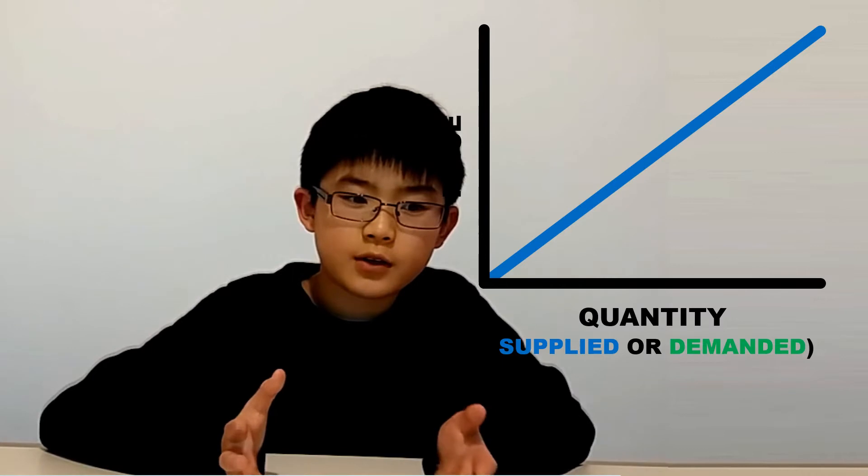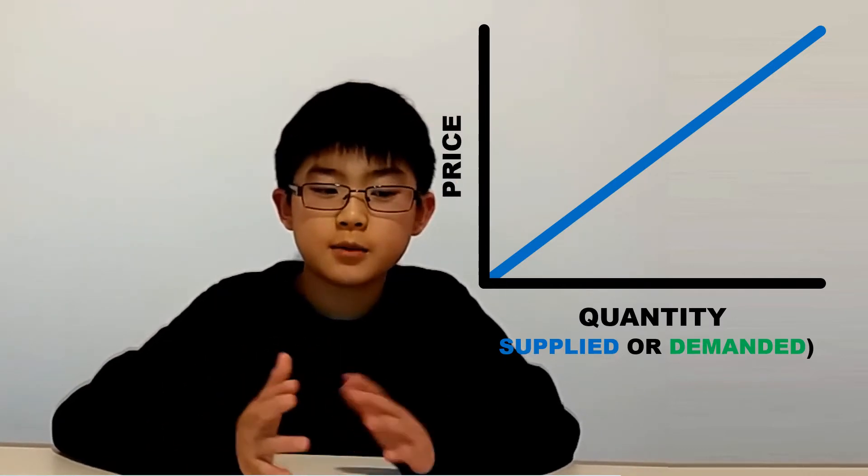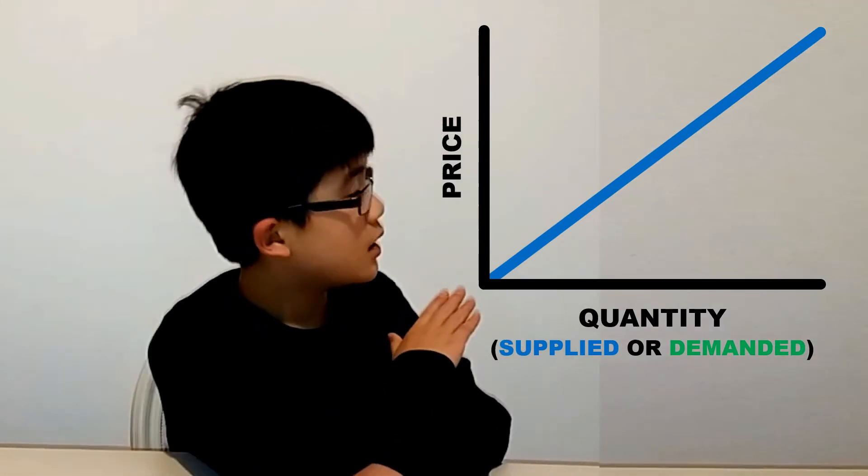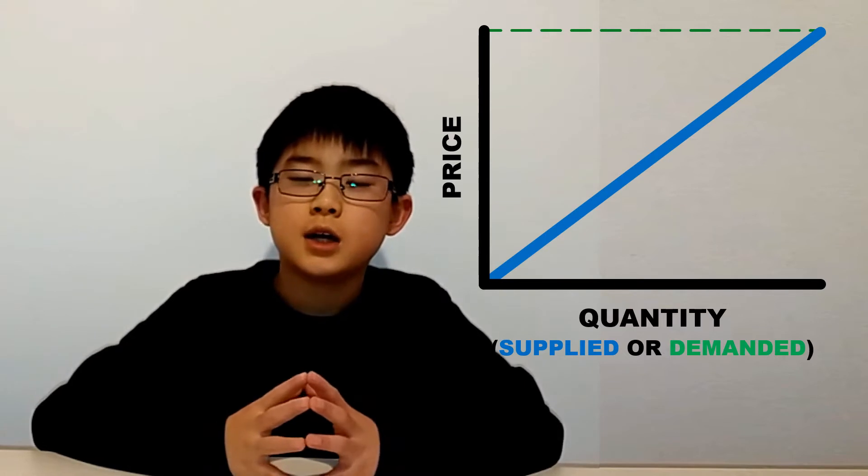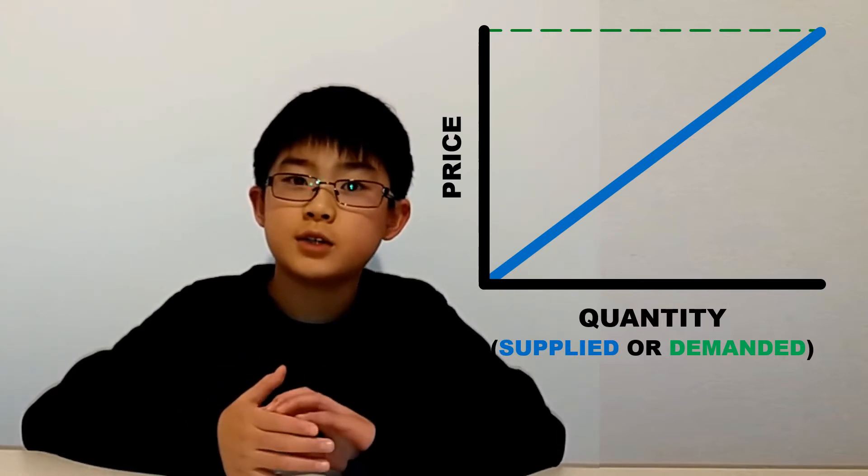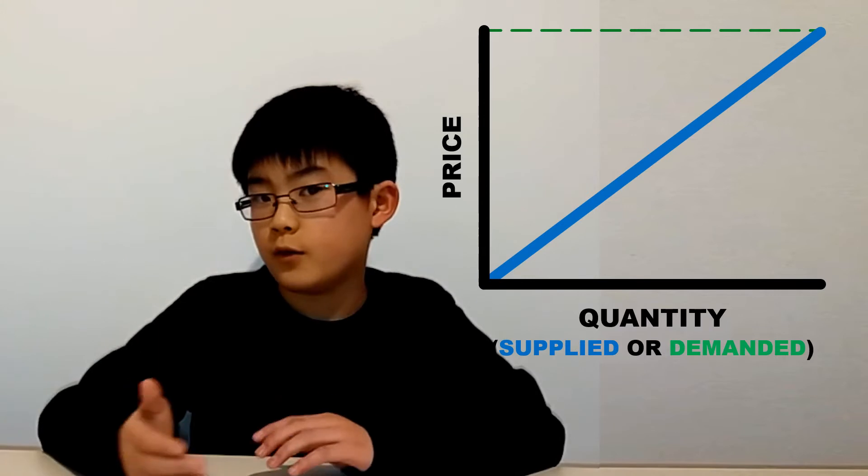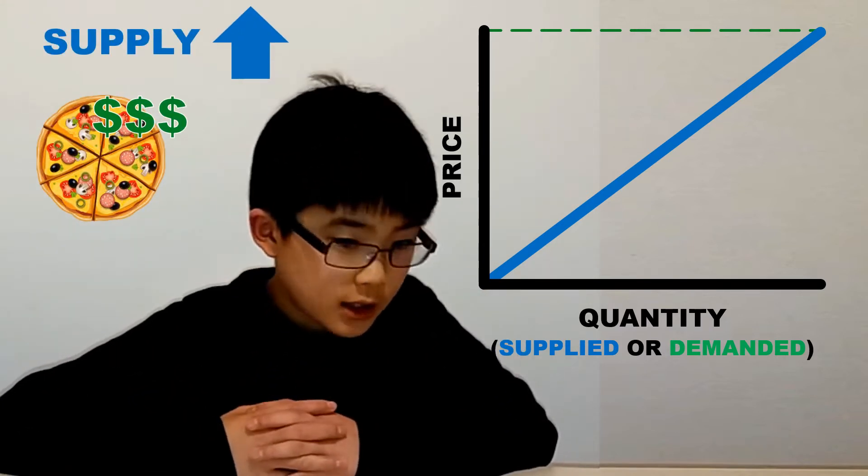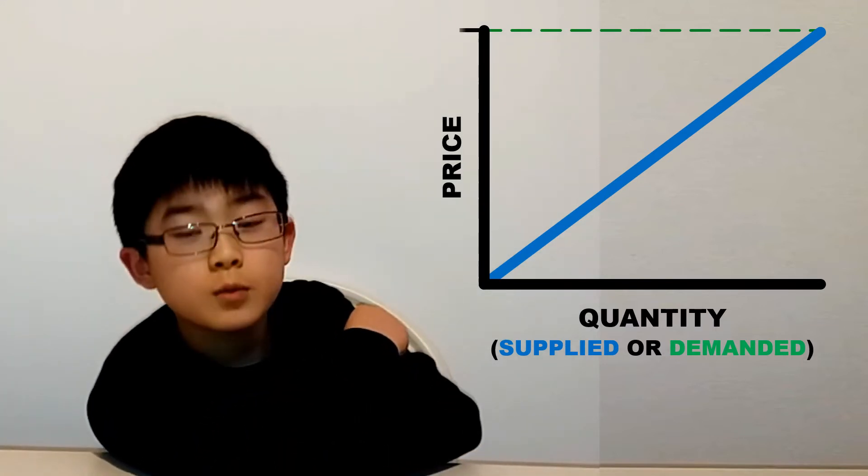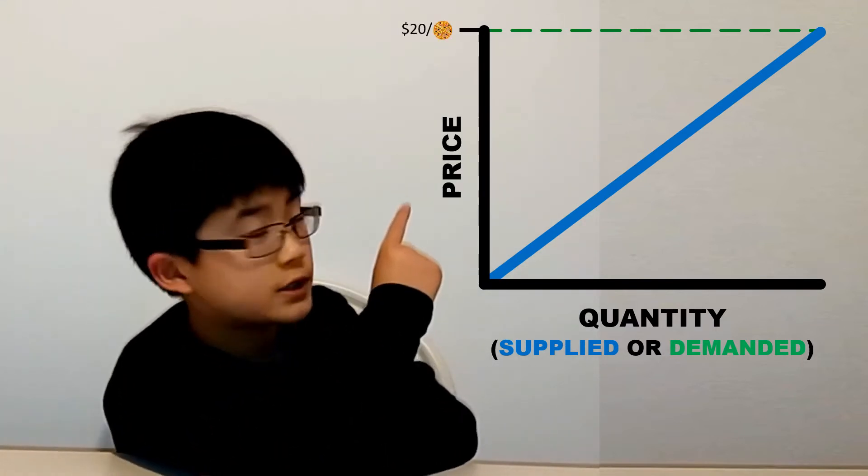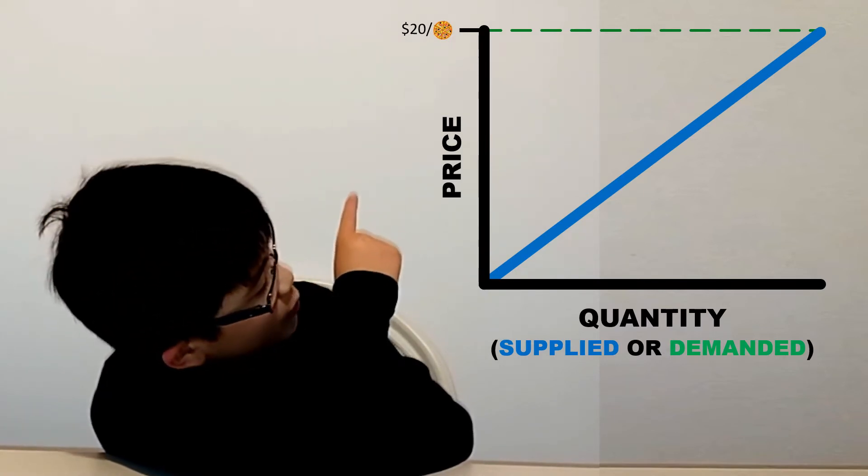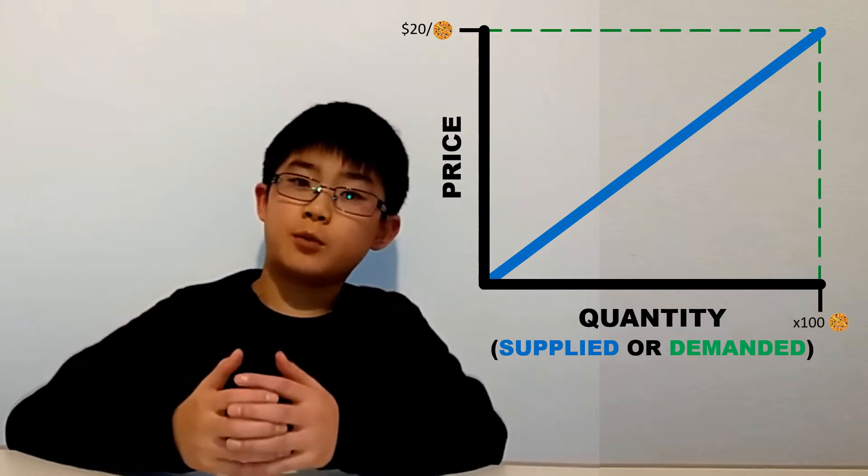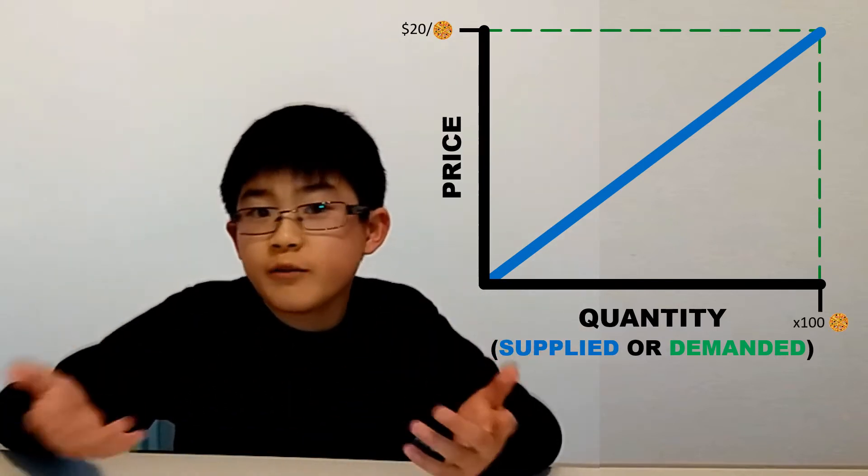If we look at the supply curve, it makes sense on its own. It's basically saying if the price were high, producers would want to produce a whole lot because they get more profit out of selling their product at a higher price. So if it was a $20 pizza, we mark that on the graph, draw it to the supply line, then down, and we get the quantity that they will produce. Let's say a hundred pizzas, and that's a lot of pizzas.